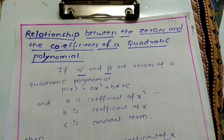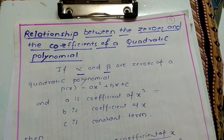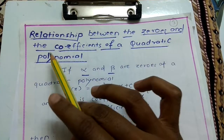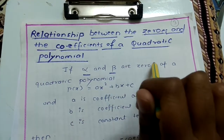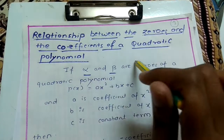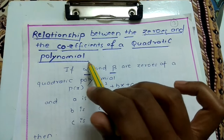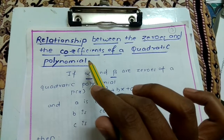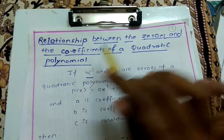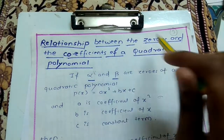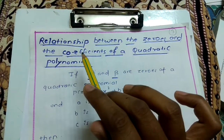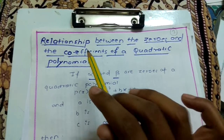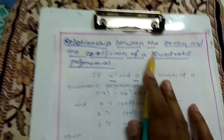Hello everyone, today we are going to discuss the concept of relationship between the zeros and the coefficients of a quadratic polynomial. This concept will help you to solve the examples of Class 10, exercise 2.2. This concept is very easy to understand so that you can solve all the exercise questions from 2.2.